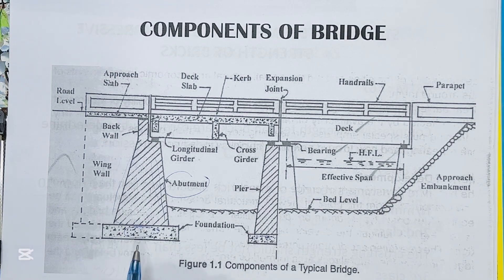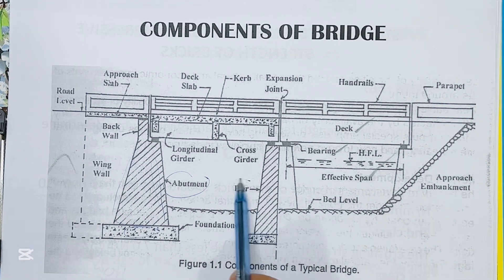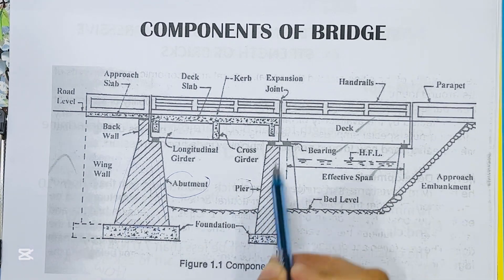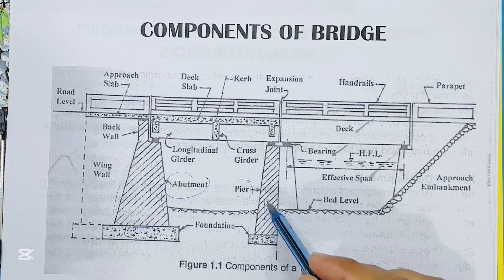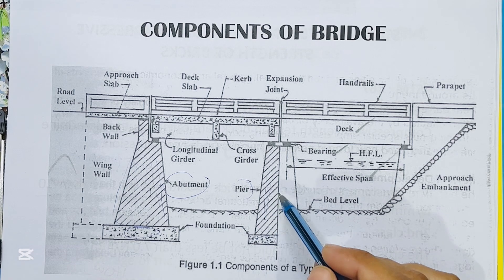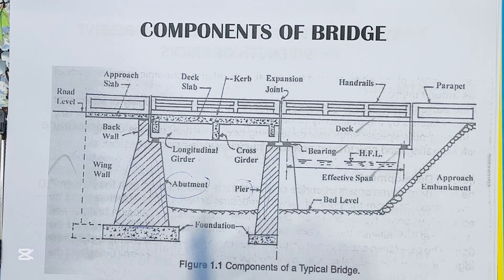Now pier — this is pier. Pier is an intermediate vertical support that holds the deck of the structure.